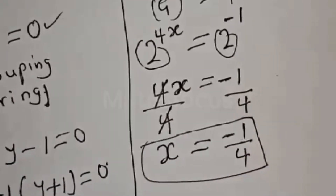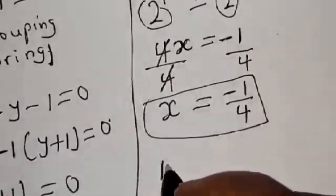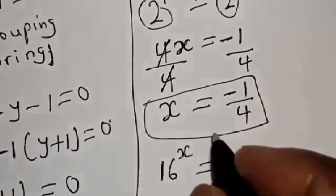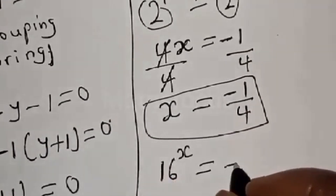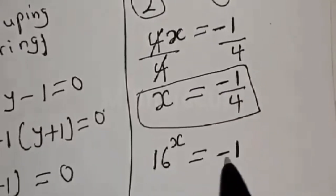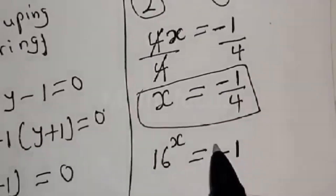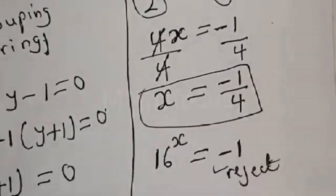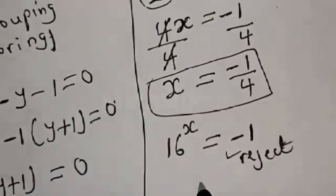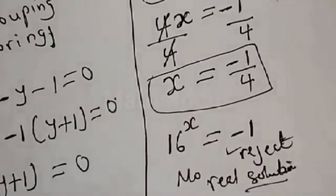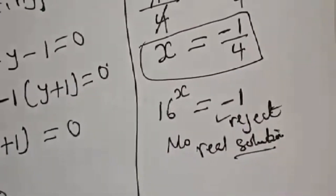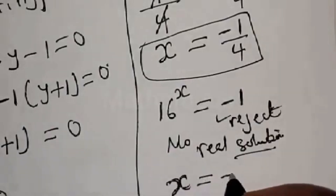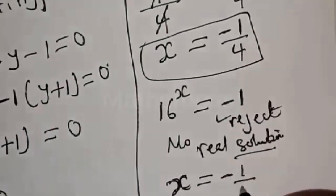For the second case, 16 raised to power s equals minus 1. Since 16 raised to power s cannot take a negative value, we reject this solution. Therefore, the only solution is s equals minus 1 over 4.